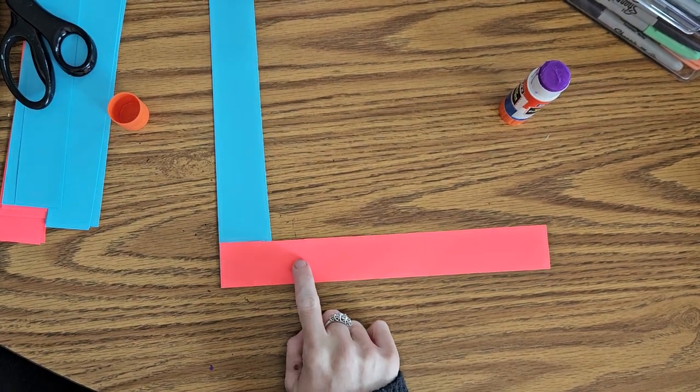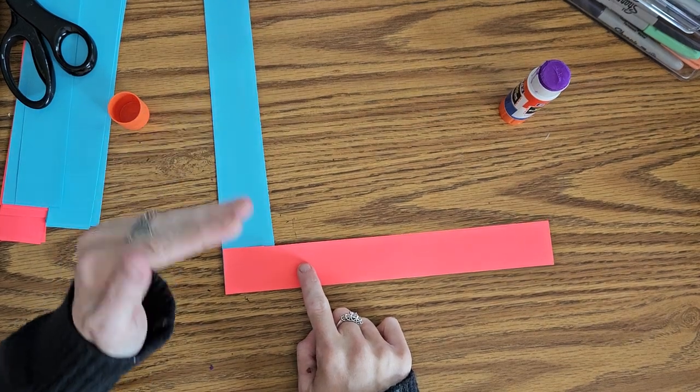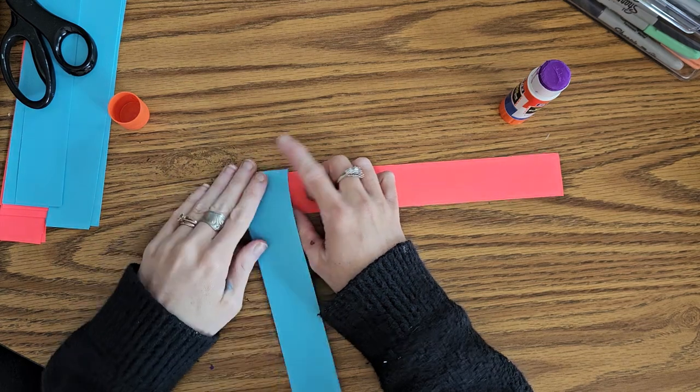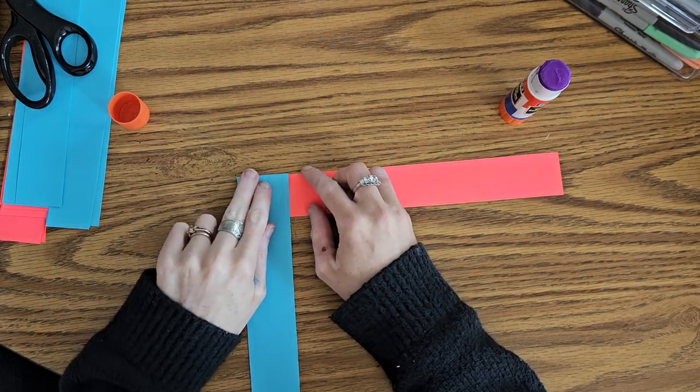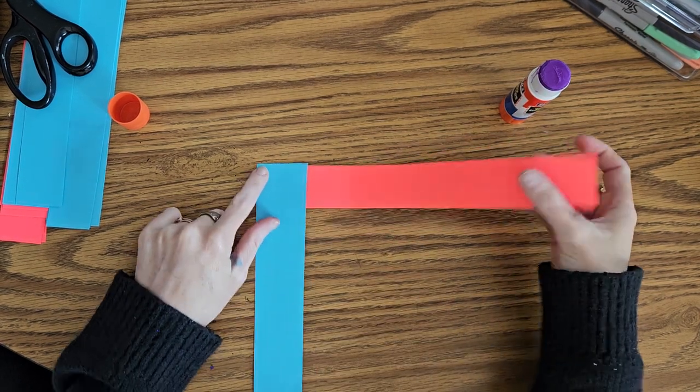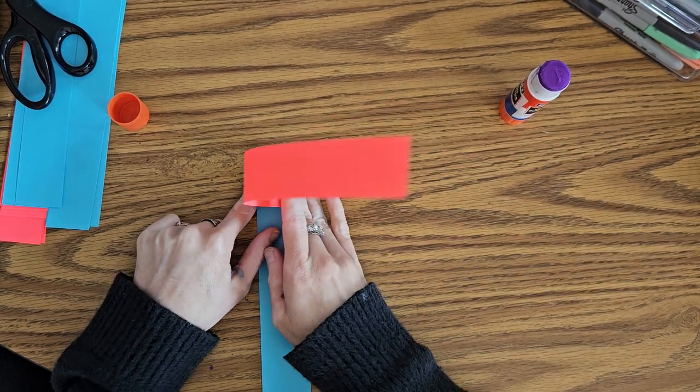Now the pink is on top. So you're going to start with the blue. And you're going to fold this strip over this way, over top of the pink. And you want it to fold right down up against that pink one. Now blue is on top. So you're going to fold the pink over. Pink is going to flip this way.